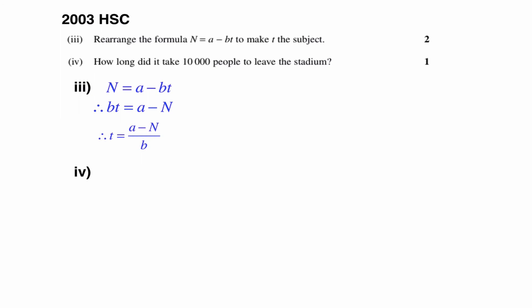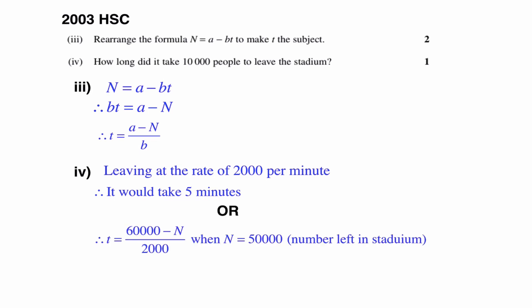Part four, how long did it take 10,000 people to leave the stadium? Well, there's a couple of ways we can do this. The first, which I think is the easiest, is to think, well, they're leaving at the rate of 2,000 people per minute. That was the gradient of our straight line. Therefore, it's going to take us five minutes to leave. I think that's the easiest way to do it, or you could use part three, but you have to be a bit careful because a, we discovered was 60,000 and b was 2,000. N is the number of people left in the stadium. So if 10,000 people have left, then there will be 50,000 left in the stadium. So if 10,000 people have left the stadium, there would be 50,000 remaining in the stadium. And thankfully, that gives us the same result as before five minutes.